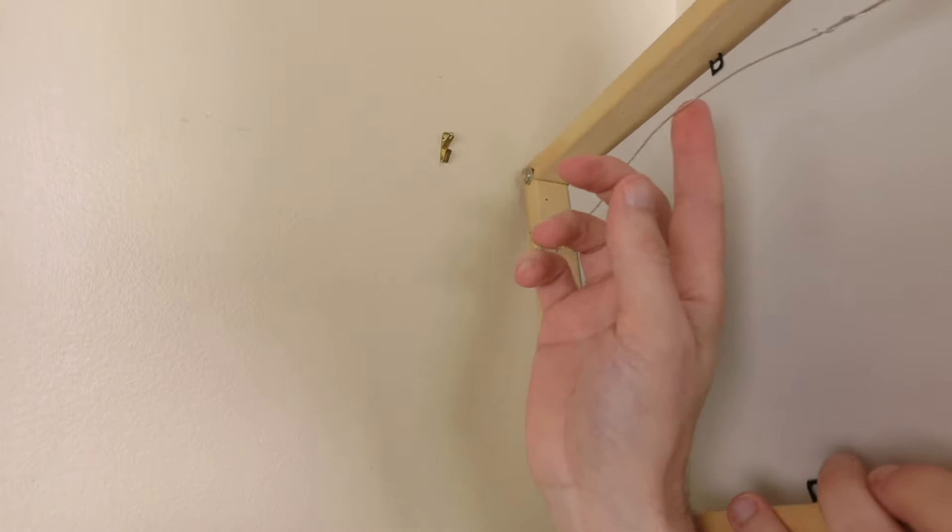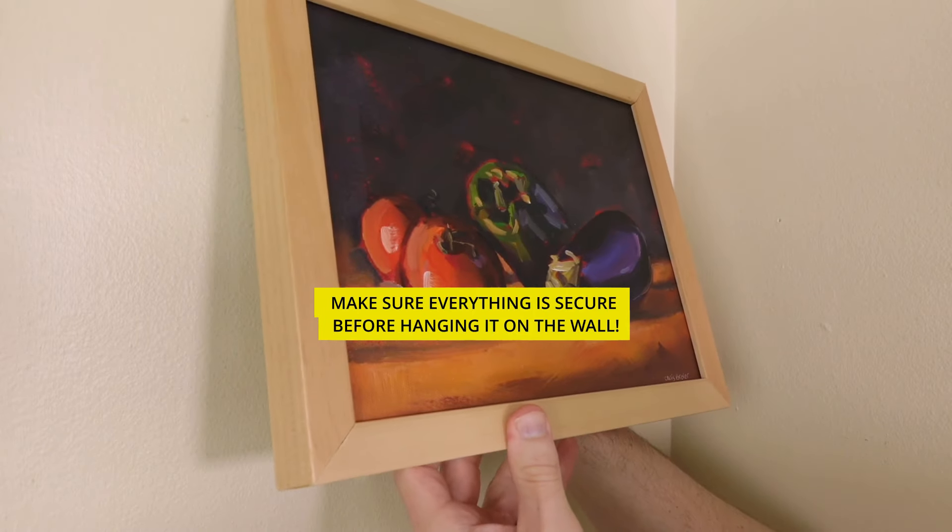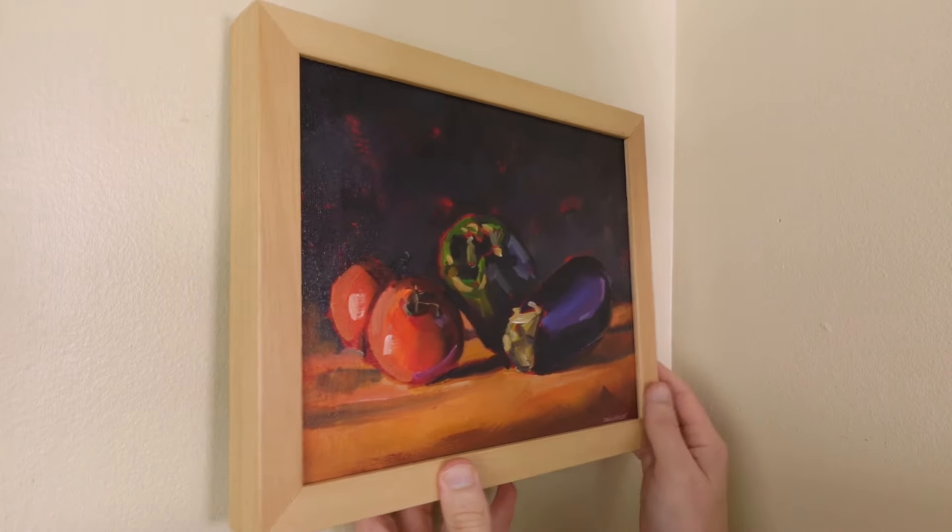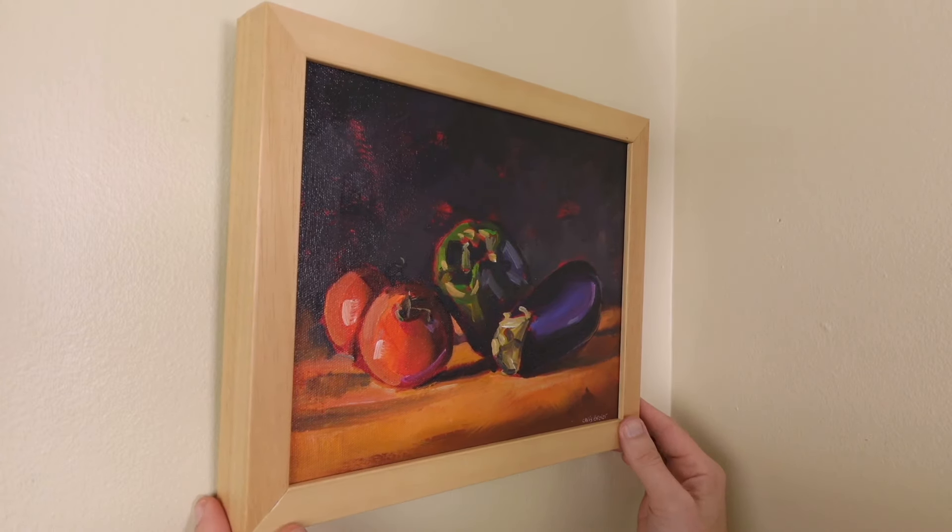So one of the reasons why I like to leave slack in the wire is because you can put your hand back here and guide it onto the picture hanging hook. I know it's secure because I felt it go on there. Just level it out and there it is.